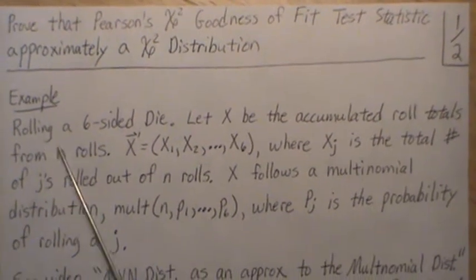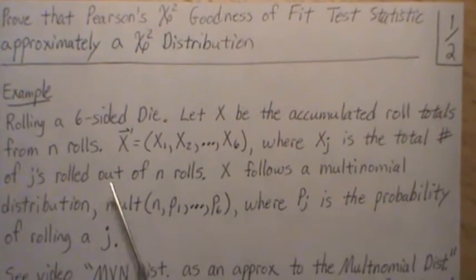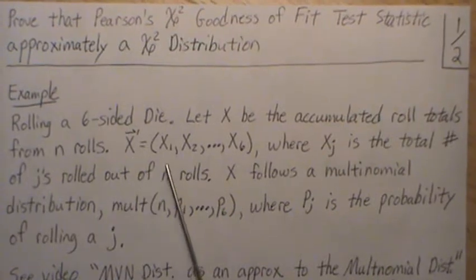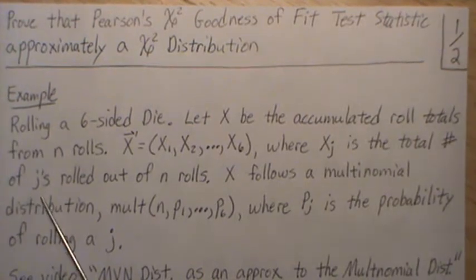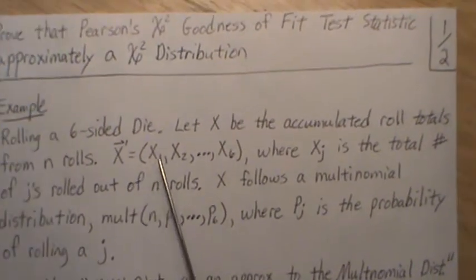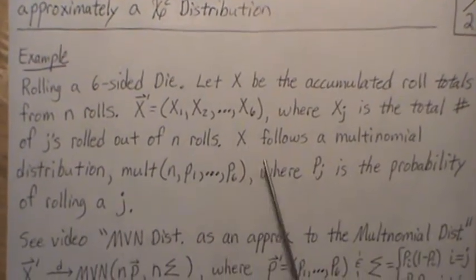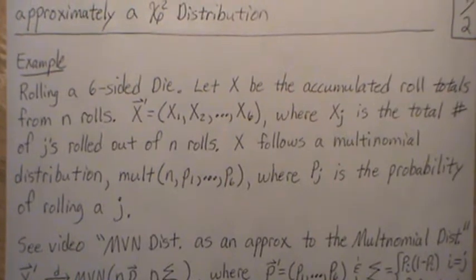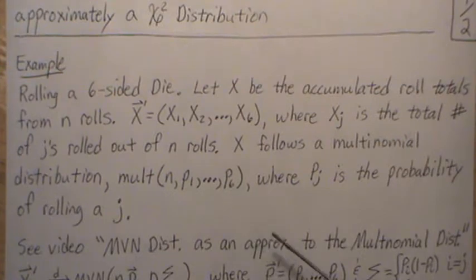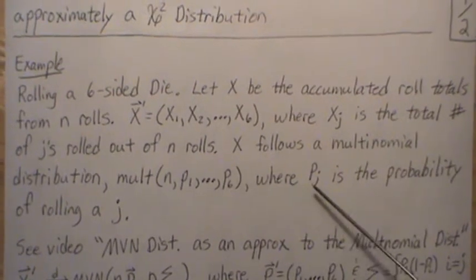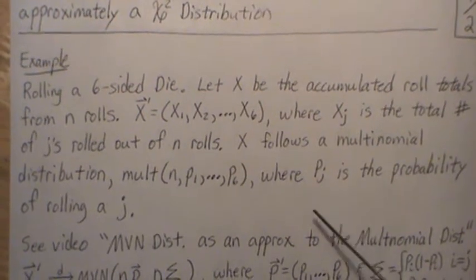Here's an example: rolling a six-sided die. Let X be the accumulated roll totals from n rolls. X has components one through six, where each X_j is the total number of j's — for instance, the total number of ones, twos, or sixes rolled out of the n rolls. X follows a multinomial distribution with parameters n, p1, p2 through p6, where n is the number of rolls and p_j is the probability of rolling a j.